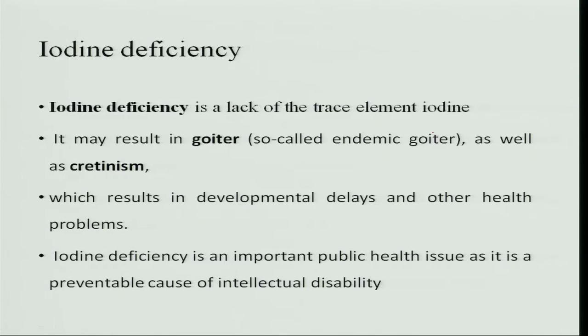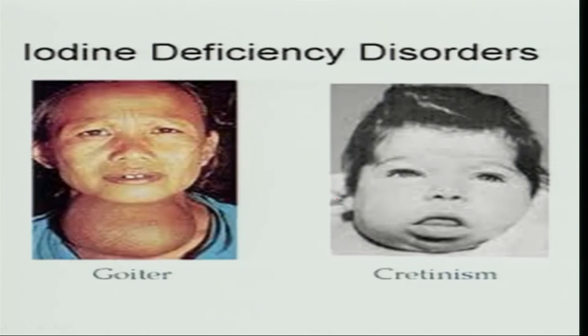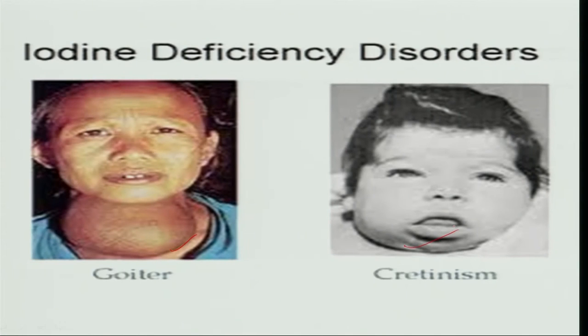Iodine deficiency results from lack of iodine in food and leads to goiter and cretinism. In children it causes developmental delays and other health problems. Iodine deficiency has become a public health problem, so the government has banned normal salt and mandated the use of iodized salt. We have seen pictures of goiter and cretinism in children, covering the major nutrient disorders that commonly affect the health of children and adults.